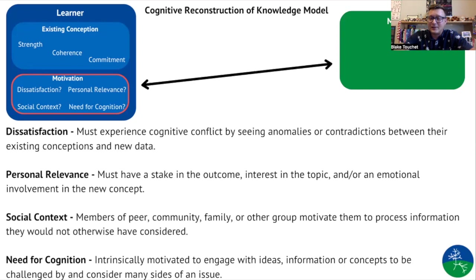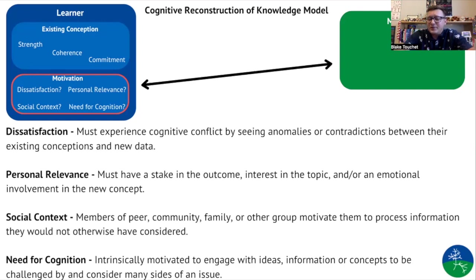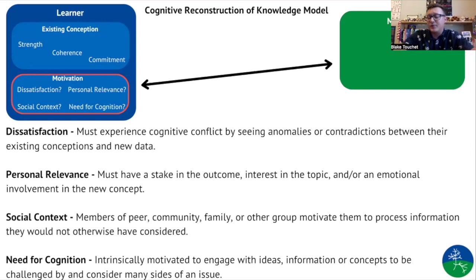The first is dissatisfaction. A person or student must experience some dissatisfaction with the idea they are currently holding before they will accept another explanation. In the classroom, this means students have to experience cognitive conflict between what they believe and the reality of the scientific consensus. This can happen by showing students anomalies or contradictions between their existing conception and new data presented along the lines of that scientific concept.